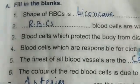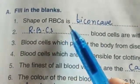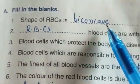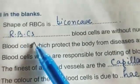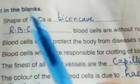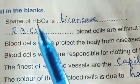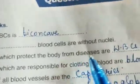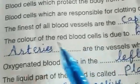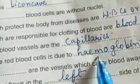Page number nine fill in the blanks: the shape of red blood cells is biconcave, which you can get from the table on page number five. Red blood cells are without nuclei. Blood cells which protect the body from diseases are white blood cells or leukocytes. Blood cells responsible for clotting of blood are blood platelets. The finest of all blood vessels are capillaries. The color of the red blood cells is due to hemoglobin.